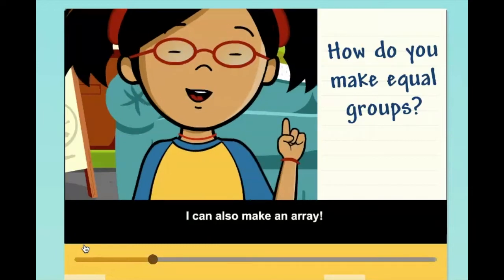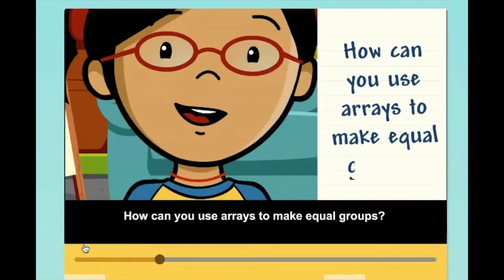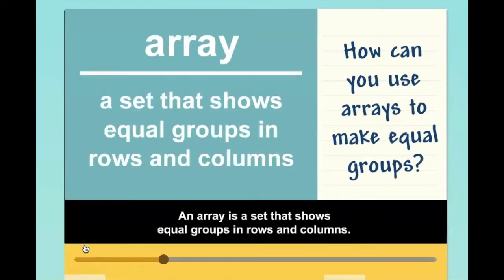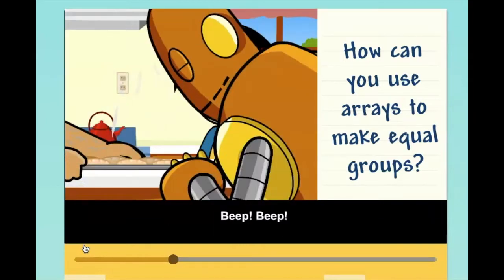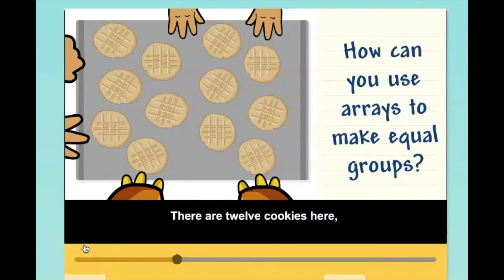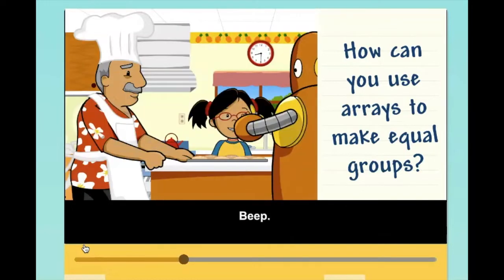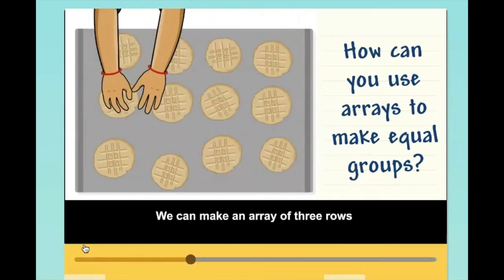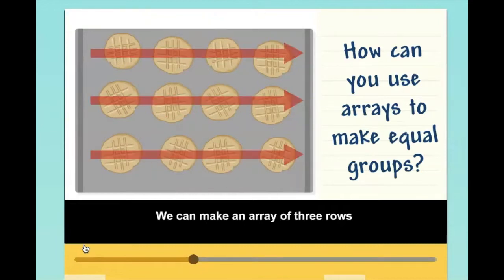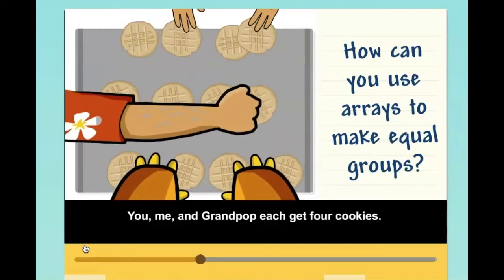I can also make an array. How can you use arrays to make equal groups? An array is a set that shows equal groups in rows and columns. You can make arrays to help you split things equally. There are twelve cookies here, and we have to divide them equally among three people. We can make an array of three rows and four columns. You, me, and Grandpa each get four cookies.